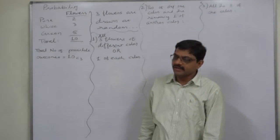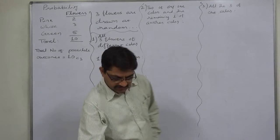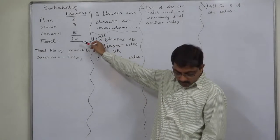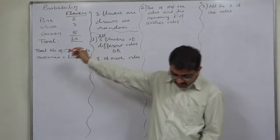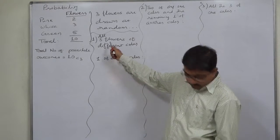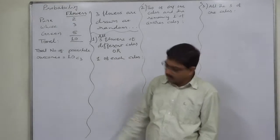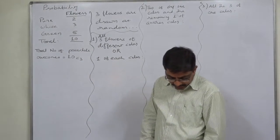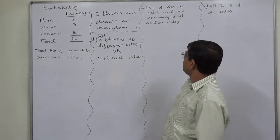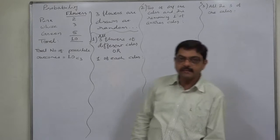Hello and welcome friends. A new case in basics of probability. In a basket or box there are two pink, three white, and five green flowers, making a total of ten flowers. Three flowers are drawn at random. The questions are: number one, all three flowers are of different color; number two, two flowers of any one color and the remaining one of another color; and number three, all three flowers are of the same color.